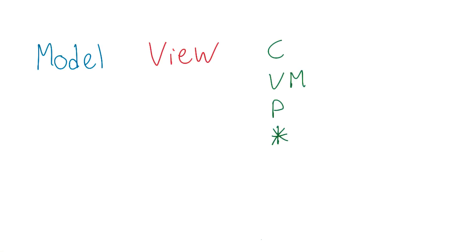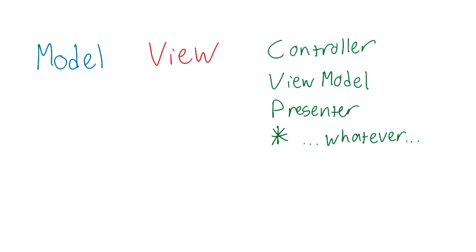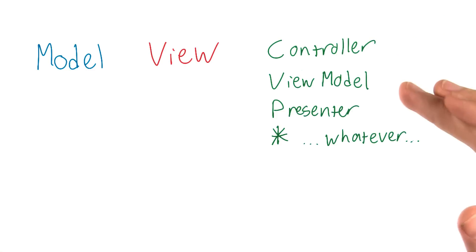If you search around the web, you'll find all kinds of acronyms like MVC, MVVM, MVP, and MVAsterisk. These stand for ModelViewController, ModelViewViewModel, ModelViewPresenter, or ModelViewWhatever.